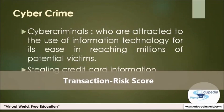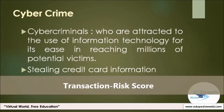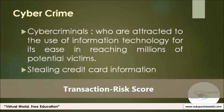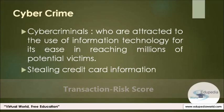An additional security option is transaction risk scoring software, which keeps track of a customer's historical shopping patterns and notes deviations from the norm. For example, if your credit card has never been used at a five-star hotel and such a transaction appears, the transaction score would go up dramatically, so much so that the transaction might be declined.